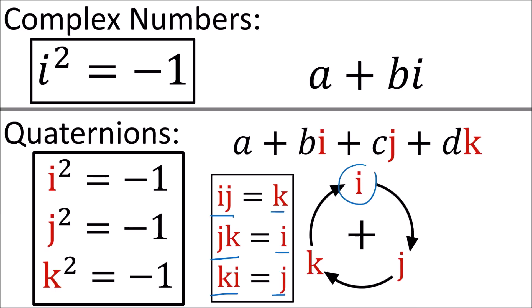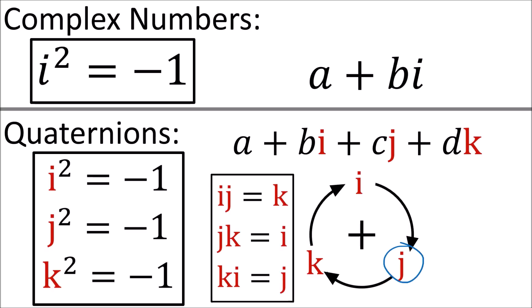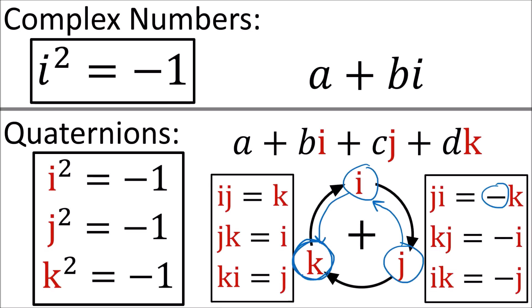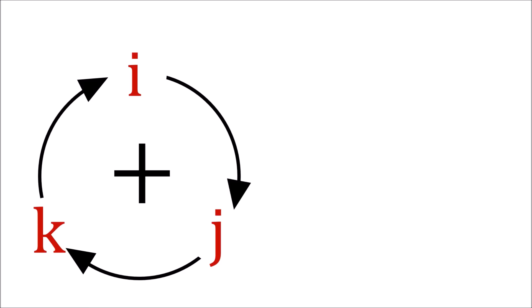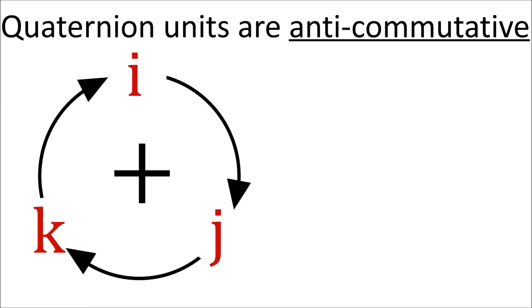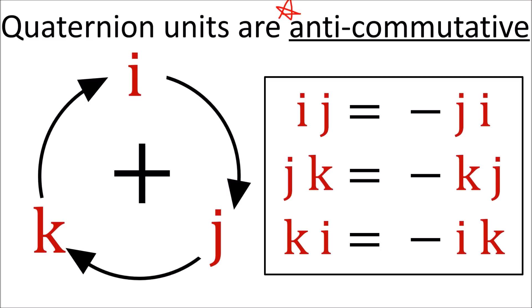For example, if we do i times j, we follow the arrows to get k. If the multiplication goes against the arrows, we get a negative sign — for example, j times i equals negative k. This gives us an important property: the quaternion imaginary units are anticommutative. This means that if we swap the order of multiplication of any two different imaginary units, we get a negative sign in front. So i times j equals negative j times i, and so on.